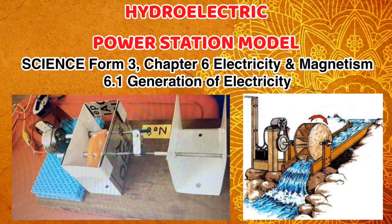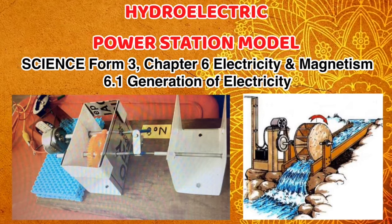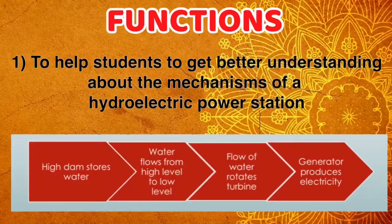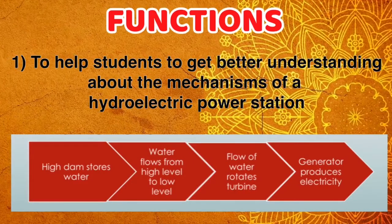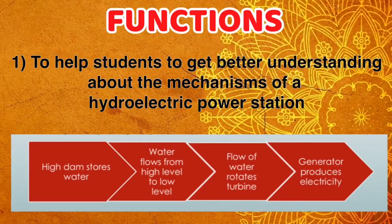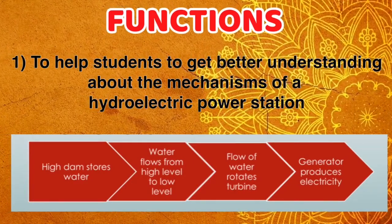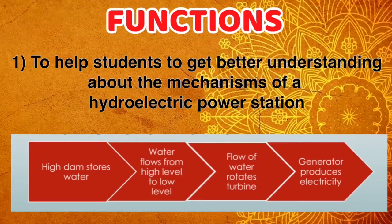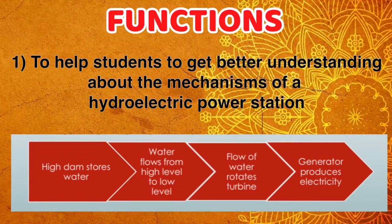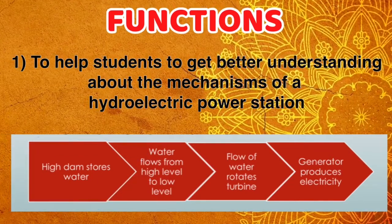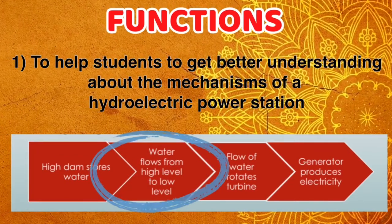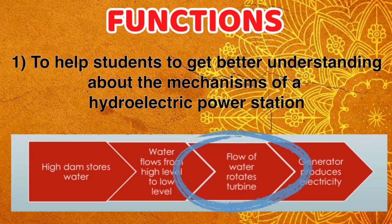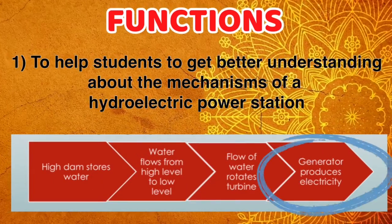We focus on subtopic 6.1, Generation of Electricity. The first function of this model is to help students get a better understanding of the mechanisms of a Hydroelectric Power Station — how water flows from high level to low level, the flow of water rotates the turbine, and the generator produces electricity.